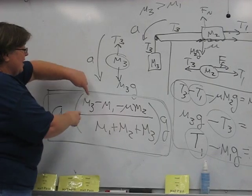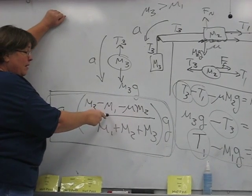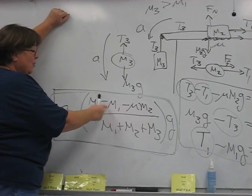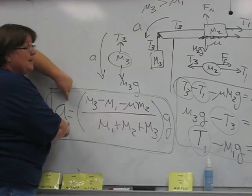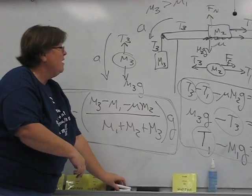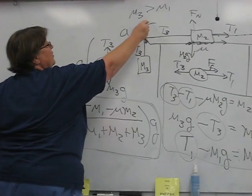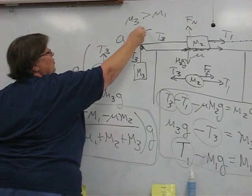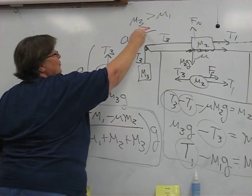And likewise, if M3 were teeny tiny and M1 were bigger, then actually, if M1 were bigger than M3, we'd get a negative acceleration. And that would just mean that our assumption that the system moved this way was incorrect. It actually moves clockwise.